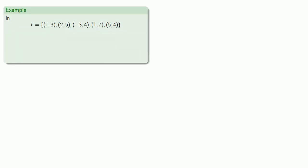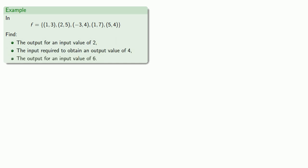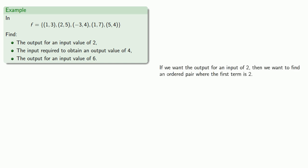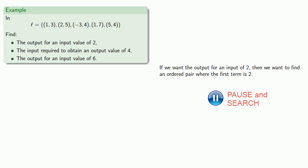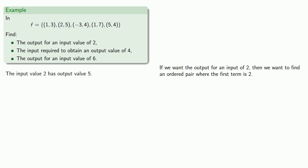For example, suppose we have a function or relation given by a list of ordered pairs. Let's find the output for an input value of 2. If we want the output for an input of 2, we look for an ordered pair where the first term is 2. Looking through our ordered pairs, we find that the input value of 2 has output value of 5.